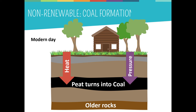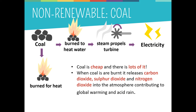Over millions of years, with changing environments, layers of rock began to build up on top of the peat. As the peat was buried further and further, heat and pressure acting upon it turned it into coal. The hotter the temperature, the deeper the coal is buried and the longer the amount of time — anthracite is the most efficient coal. Coal is still being produced today in swampy tropical regions, but because it takes millions of years to form, it is not a renewable resource.